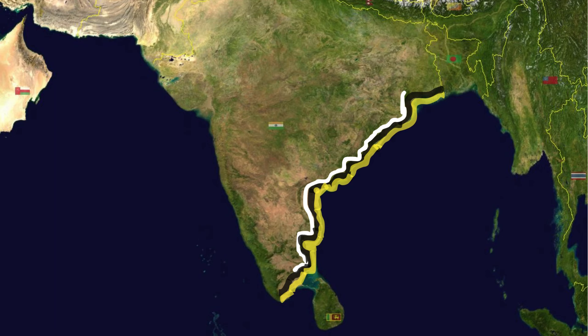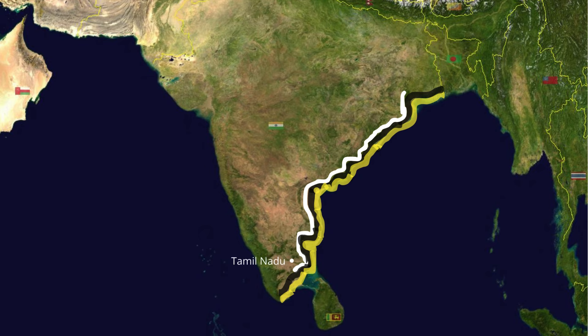The eastern coastal plain refers to a wide stretch of land in India located between the Bay of Bengal and the Eastern Ghats. These plains are wider and flatter than the western coastal plains and they extend from Tamil Nadu in the south to West Bengal in the north, passing through Andhra Pradesh and Odisha. The width ranges from 100 to 130 km.